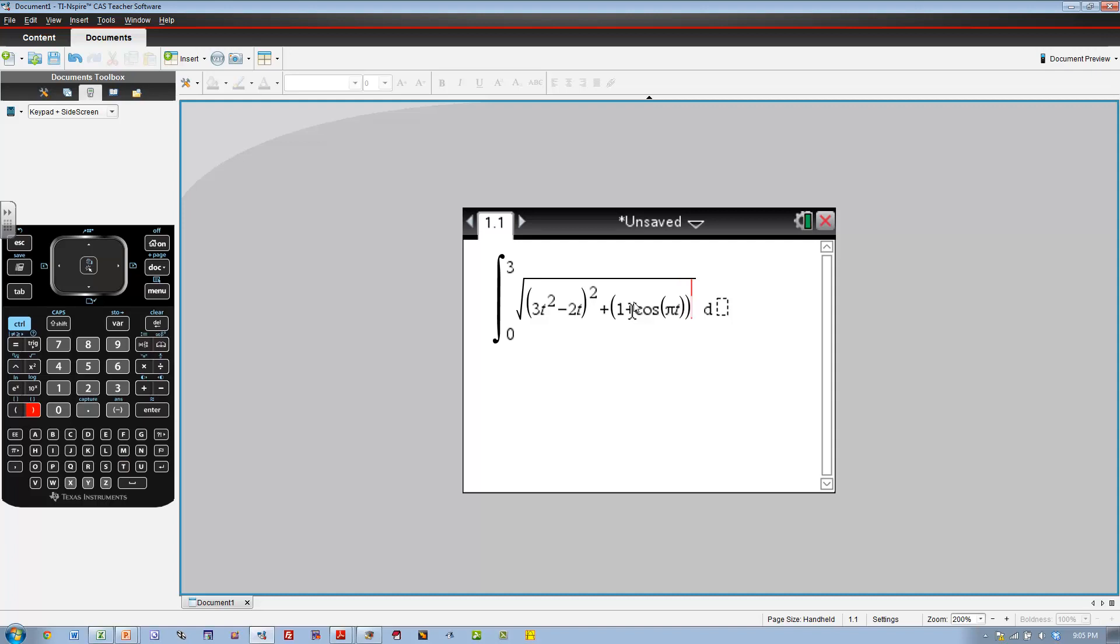And that's squared, and then all of this dt, and we get the total distance traveled as 19.343.